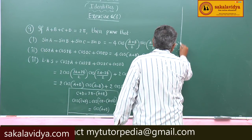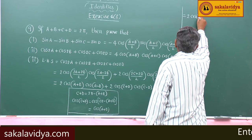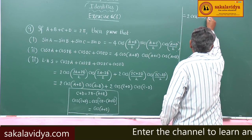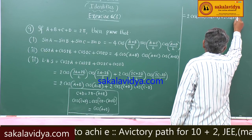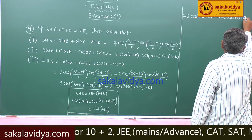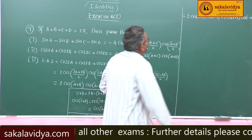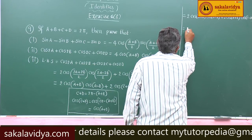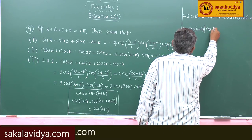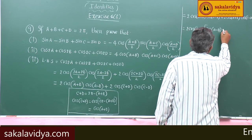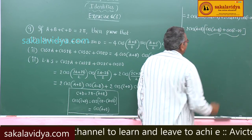Now the left hand side can be written as 2cos(A+B)·cos(A−B) plus 2cos(A+B)·cos(C−D). We take out 2cos(A+B) as common factor. So, taking 2cos(A+B) common out, we have cos(A−B) plus cos(C−D) remaining inside.